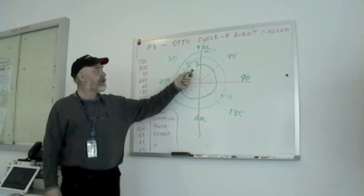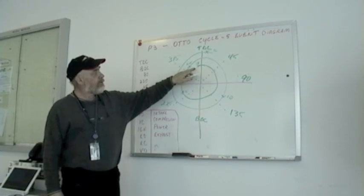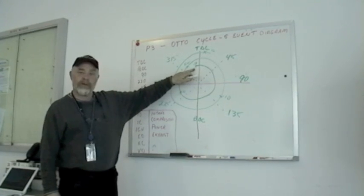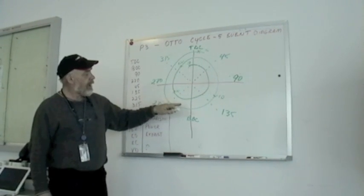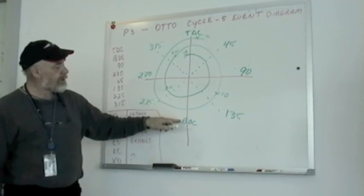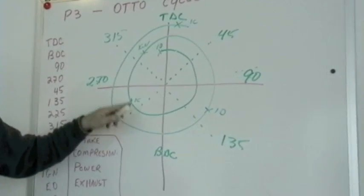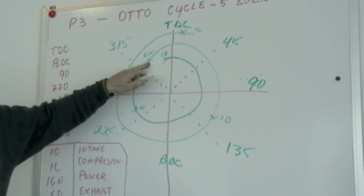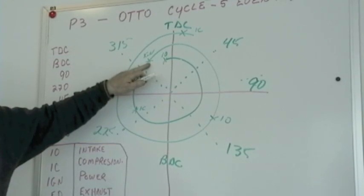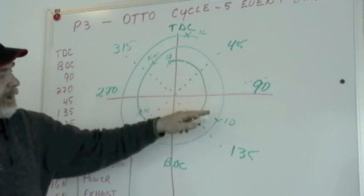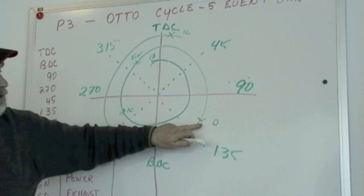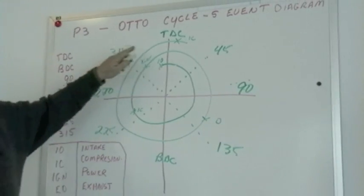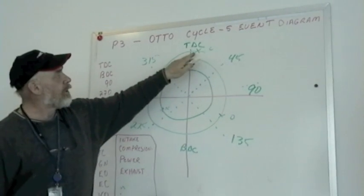The intake valve opens before top dead center. The intake valve closes 60 degrees after bottom dead center. The ignition is in the middle swirl — 30 degrees before top dead center. The exhaust valve opens here and the exhaust valve closes here.